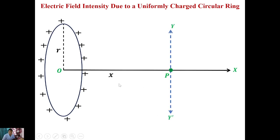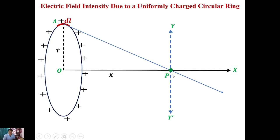The y-axis is perpendicular to the x-axis. To find the electric field intensity at point P due to the whole uniformly charged circular ring, consider an elementary length DL at point A on the ring. Due to this DL, the electric field intensity direction at point P will be along AP. Suppose the electric field intensity at point P due to DL is DE, which is along the direction of AP.